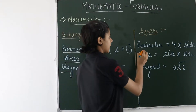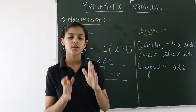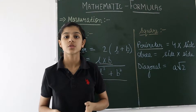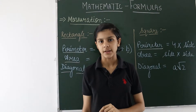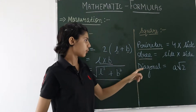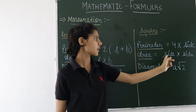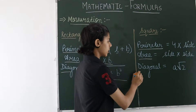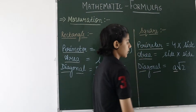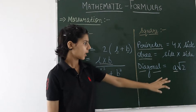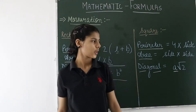Now for the square. For finding the perimeter of a square, the formula is 4 multiplied by the side. All 4 sides of a square are equal, so we multiply 4 by the side to get the perimeter. For the area, the formula is side into side — we multiply the side by itself. The diagonal of the square is A times under root 2, where A is the side. We multiply the given side by under root 2 to get the diagonal.